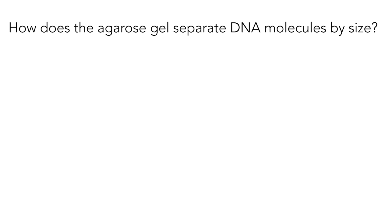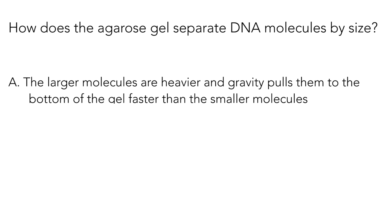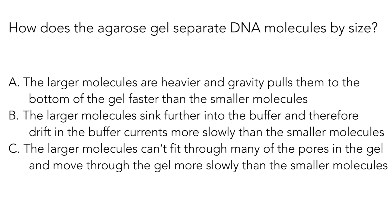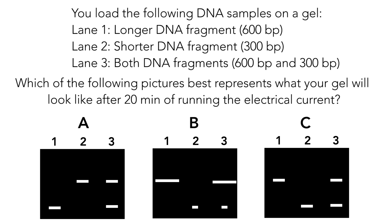Question number two. How does the agarose gel separate DNA molecules by size? A. The larger molecules are heavier, and gravity pulls them to the bottom of the gel faster than the smaller molecules. B. The larger molecules sink further into the buffer, and therefore drift in the buffer currents more slowly than the smaller molecules. C. The larger molecules can't fit through many of the pores in the gel, and move through the gel more slowly than the smaller molecules. Question three. You load the following DNA samples on a gel. Lane one, a longer DNA fragment of 600 base pairs. Lane two, a shorter DNA fragment of 300 base pairs. Lane three, both DNA fragments, 600 base pairs and 300 base pairs. Which of the following pictures best represents what your gel will look like after 20 minutes of running the electrical current?